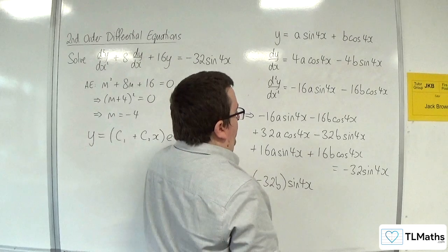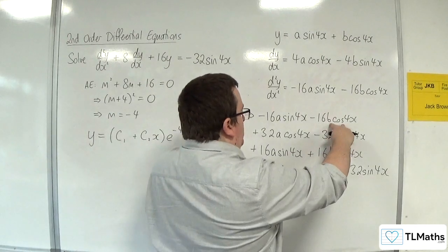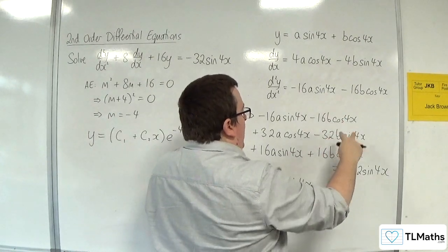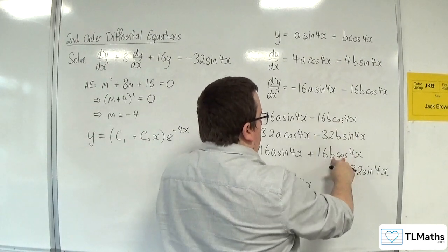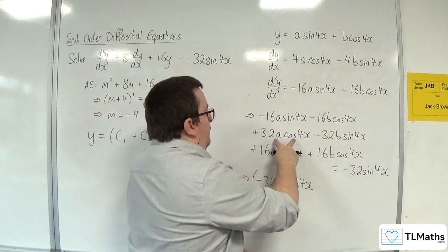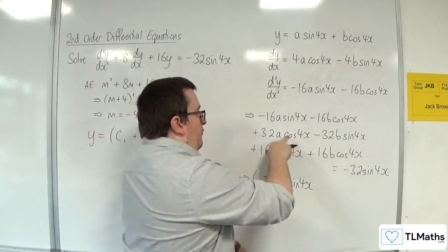Now for the cosines, we've got the -16b cos(4x) and the 16b cos(4x). So they knock each other out, and I'm going to be left with 32a cos(4x).